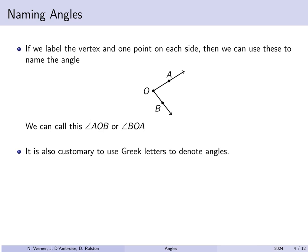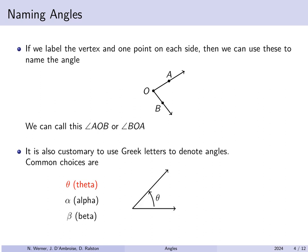It's also customary to use Greek letters to denote angles. By far the most common is theta, but if we have multiple angles we may use alpha, beta, etc. Here, for example, the angle theta is marked with a specific direction, while alpha is marked going in the other direction.